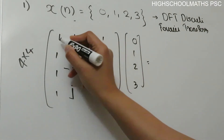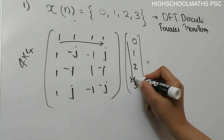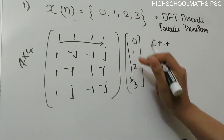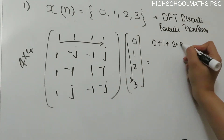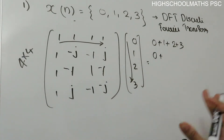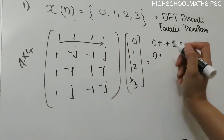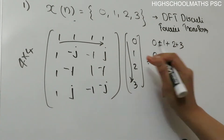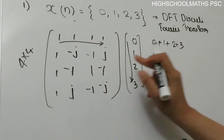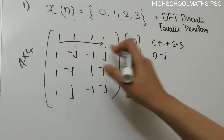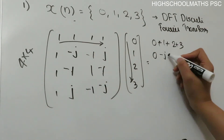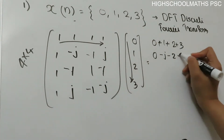For the first row, multiply: 0 into 1 = 0, plus 1 into 1 = 1, plus 2 into 1 = 2, plus 3 into 1 = 3. Second row: 0 into 1 = 0. Then 1 into j. Then 1 into 1, minus 1, minus 1, j. Here we have plus, minus 1. The plus-minus is multiplied by minus 1. Here we add 2 into 1 = minus 2. This is 3 into j = plus 3j.